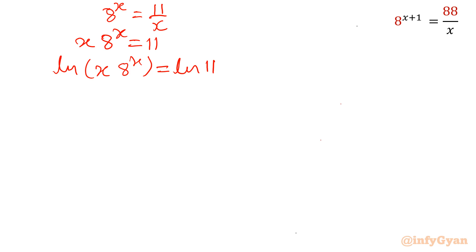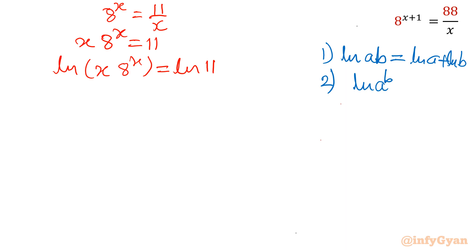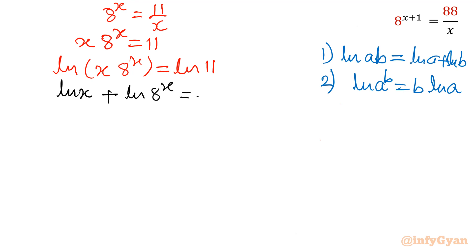Now for properties: Property 1 is ln(ab) = ln a + ln b. Property 2, which we will use a little later, is ln(a^b) = b · ln a. Applying property 1, we write ln(x · 8^x) = ln x + ln(8^x) = ln 11.